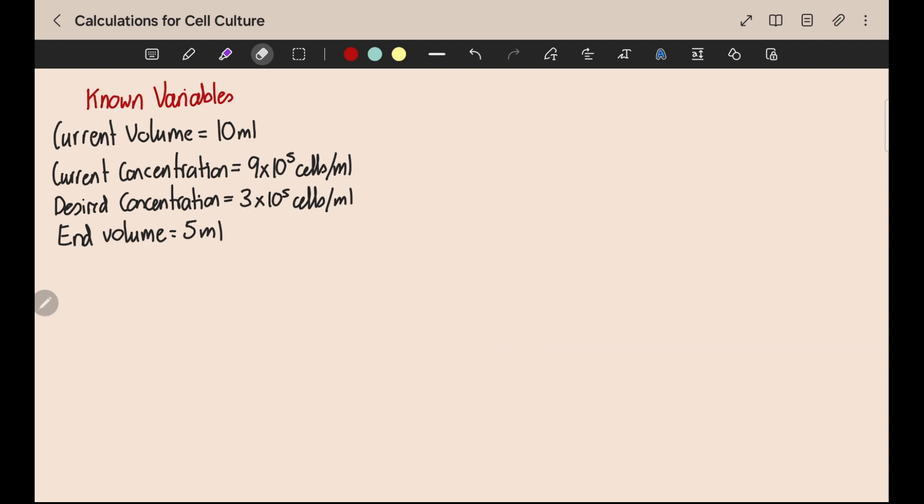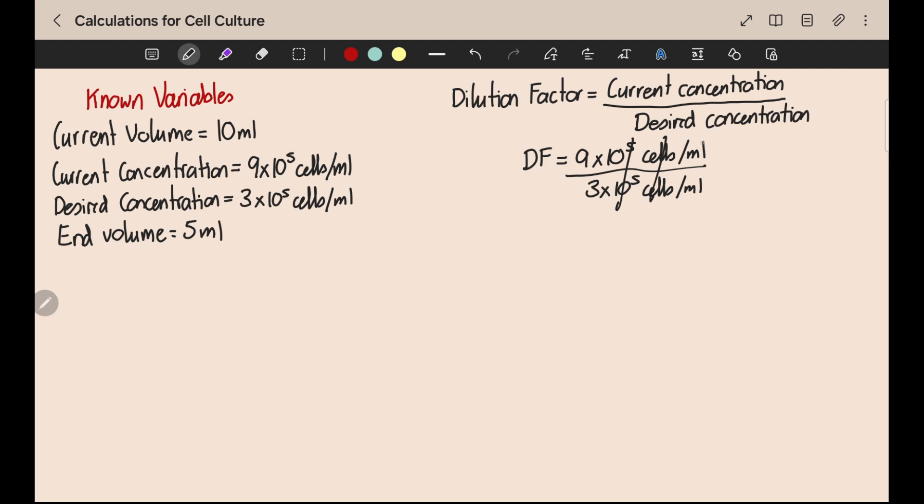First we need to calculate our dilution factor, which if you remember from part 1 is equal to the current concentration divided by the concentration you want. So in this case 9 times 10 to the 5 cells per mil divided by 3 times 10 to the 5 cells per mil. Obviously the 10 to the 5 cells per mil cancel each other out. You're left with 9 divided by 3 which is of course 3. So our dilution factor is 3.